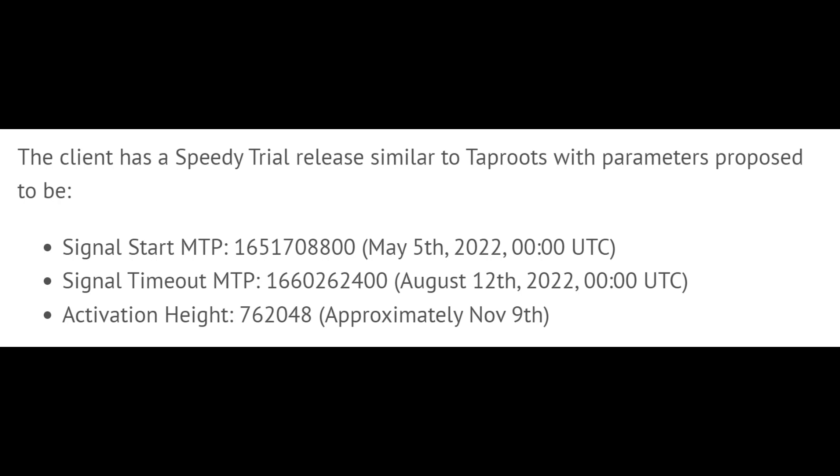You may be asking: what's the controversy? Why are certain folks up in arms? It is because of the use of the speedy trial deployment and activation method. Keep in mind this was used as part of Taproot. Jeremy has created a client of Bitcoin that has CTV — Check Template Verify — embedded and activated in it. The speedy trial process will start signaling on May 5th with a timeout of August 12th. If miners signal their support, the activation height would be slated for block 762048, which would approximately be November 9th.